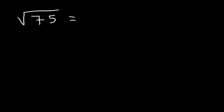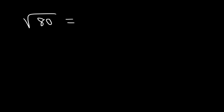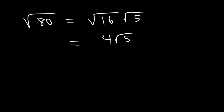Try this one: square root of 75. What perfect square goes into 75? 25 goes into 75 — 25 times 3 is 75 — and the square root of 25 is 5, so the answer is 5 root 3. Now what about the square root of 80? The largest perfect square that goes into 80 is 16 (not 4, since 16 is bigger). 80 divided by 16 is 5, and the square root of 16 is 4, so the answer is 4 root 5.